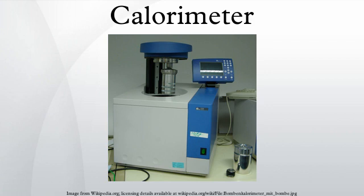A constant pressure calorimeter measures the change in enthalpy of a reaction occurring in solution during which the atmospheric pressure remains constant. An example is a coffee cup calorimeter, which is constructed from two nested styrofoam cups and a lid with two holes, allowing insertion of a thermometer and a stirring rod. The inner cup holds a known amount of a solute, usually water, that absorbs the heat from the reaction.